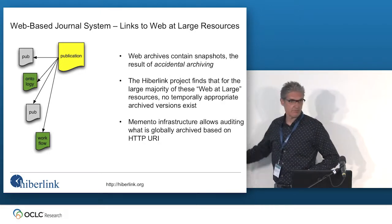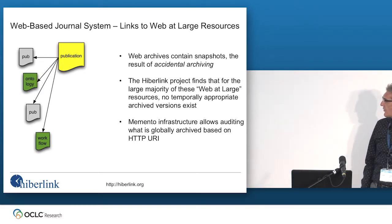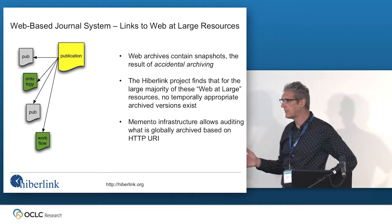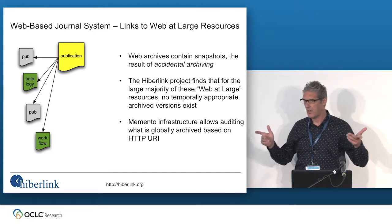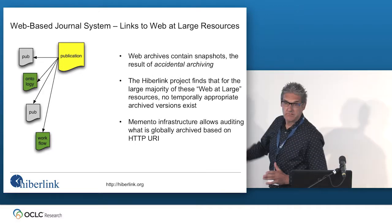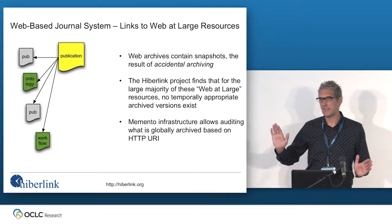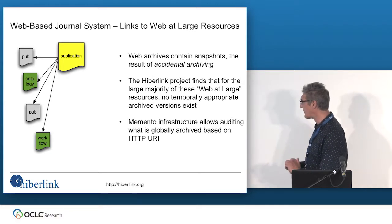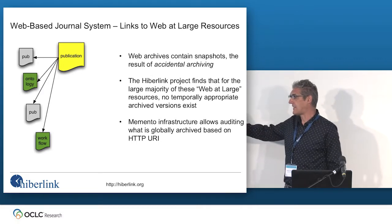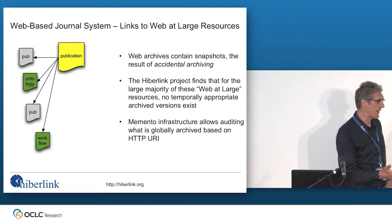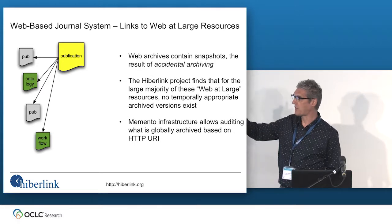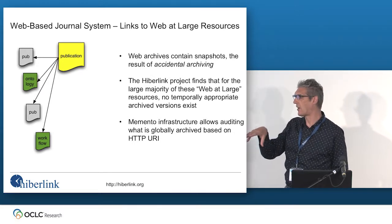It gets worse. Related to research I'm doing in the Hyperlink project with the University of Edinburgh: not only are publications linking to other publications, they're also linking to all kinds of web-at-large resources — project websites, software, presentations. And increasingly, dramatically, there's an increase in links to those kinds of things in publications. We find in the Hyperlink research that a large majority of these things are not archived. Where would they be? In web archives like the Internet Archive. The large majority of things we reference that are not publisher content — we do not have an archival record of them.